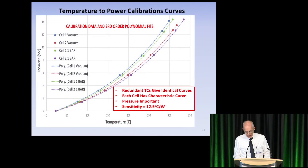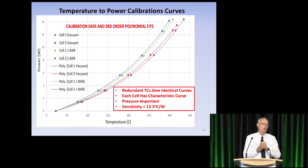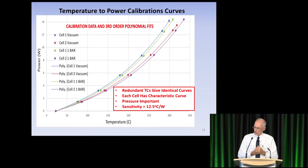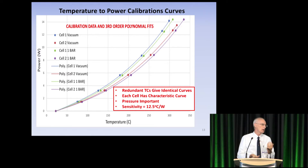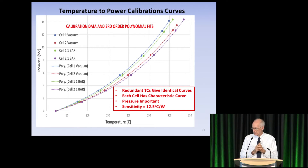The calibration curves show eight curves — one for each thermocouple in two cells under two different pressures. The calibration curves for the two different thermocouples in the same cell lay right on top of each other, so effectively there are just four different calibration curves. The sensitivity of the device is about 12.5 degrees of temperature change per watt of power change.